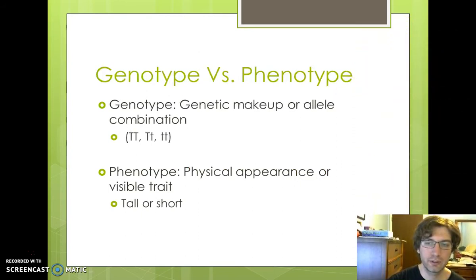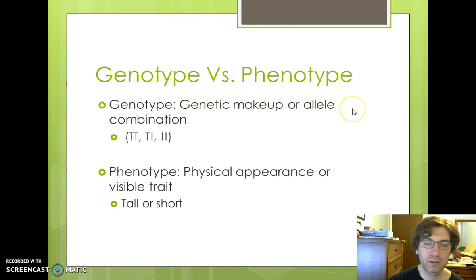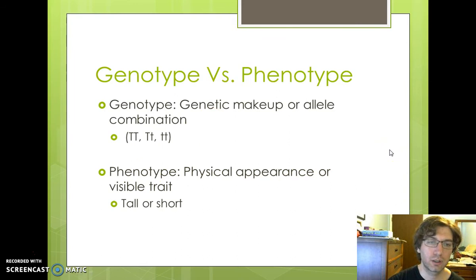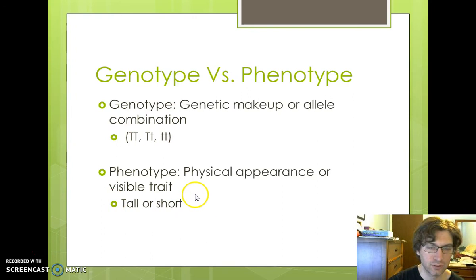Next we want to cover two more key terms: genotype and phenotype. Genotype deals with your genes — that is your genetic makeup, or your allele combinations, meaning your letter combinations. Phenotype — the 'ph' you can think of as physical. Phenotype refers to your physical appearance or your visible trait, which would be either tall or short in this case. So if your genes say you're purebred tall with two capital T alleles, then your phenotype would be tall.